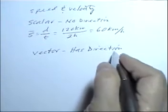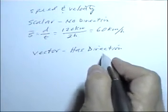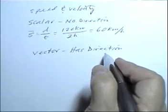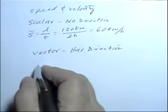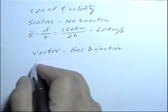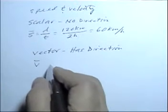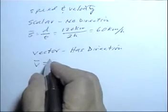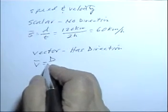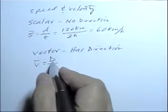direction. And the important thing to understand is why velocity has a direction. Velocity has a direction because the equation to calculate velocity, or average velocity, is not distance divided by time - it's displacement divided by time. In this